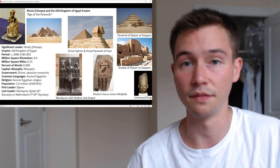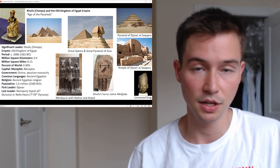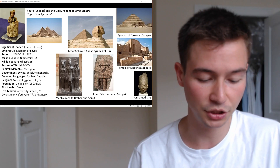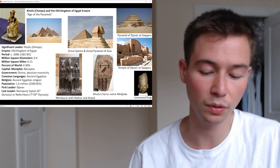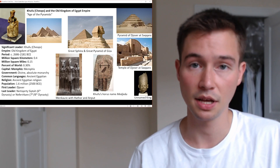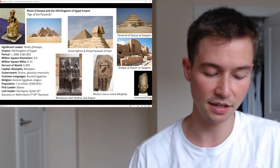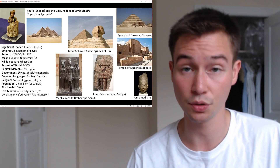With Narmer's unification, a dynastic system was established where power was inherited within a ruling family. Pharaohs were revered as living gods, wielding immense political and religious authority. At the apex of the political hierarchy stood the pharaoh, considered a living deity on Earth. This divine status was emphasized through elaborate rituals, monumental constructions, and close association with the gods.